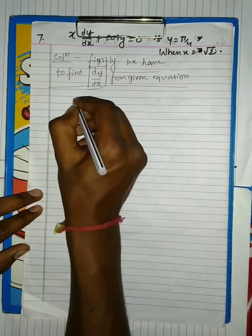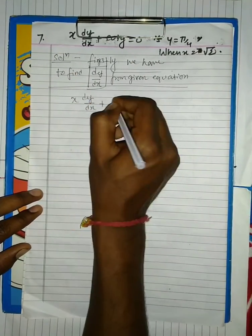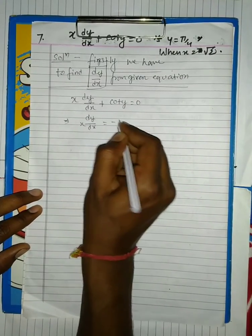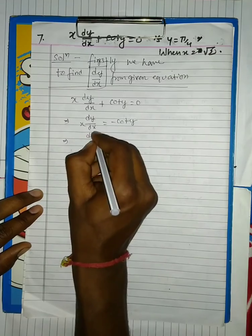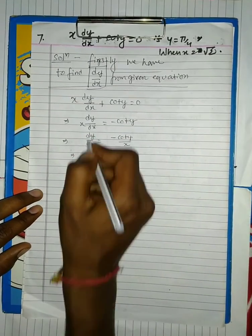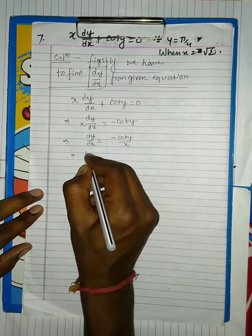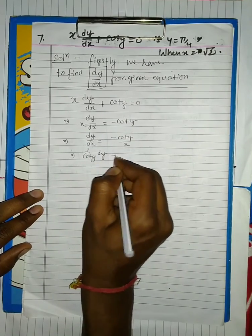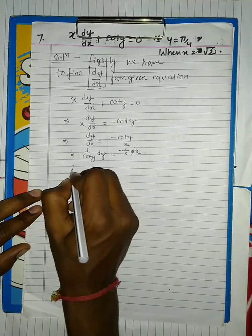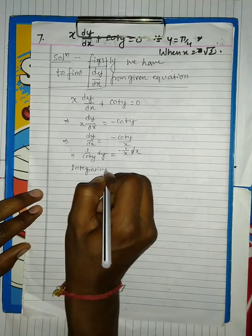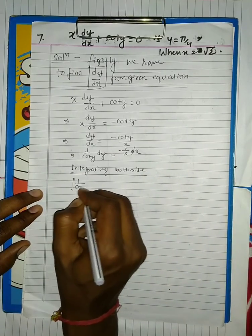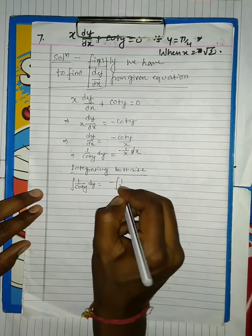In this question, we have to find both the general and particular solution. It is not explicitly stated, but the condition is given, so we have to solve both. Remember that the particular solution is achieved when we put the value of c in the general solution.